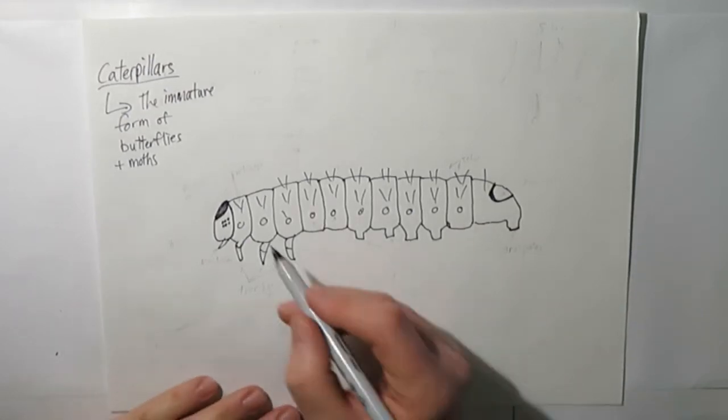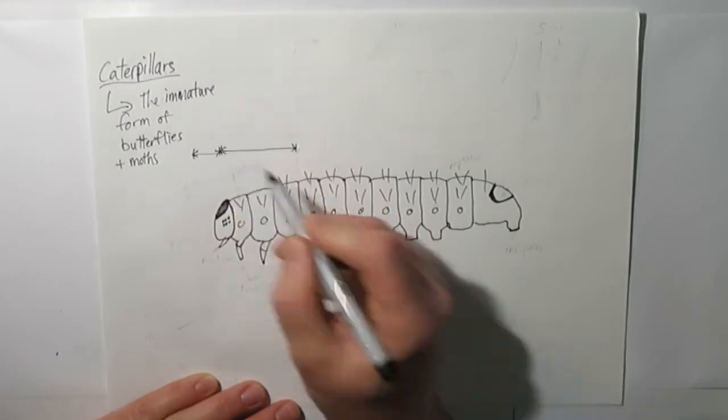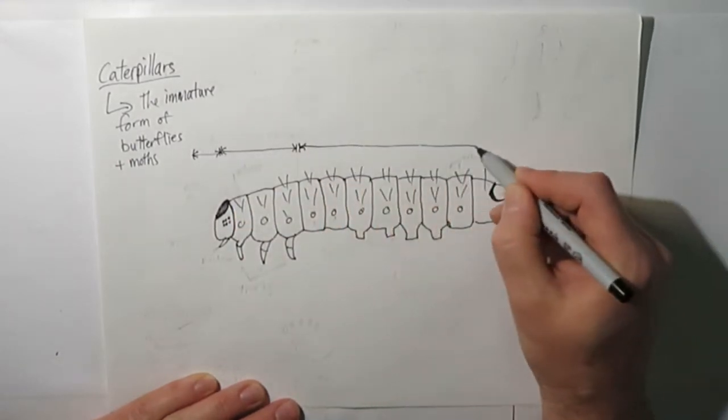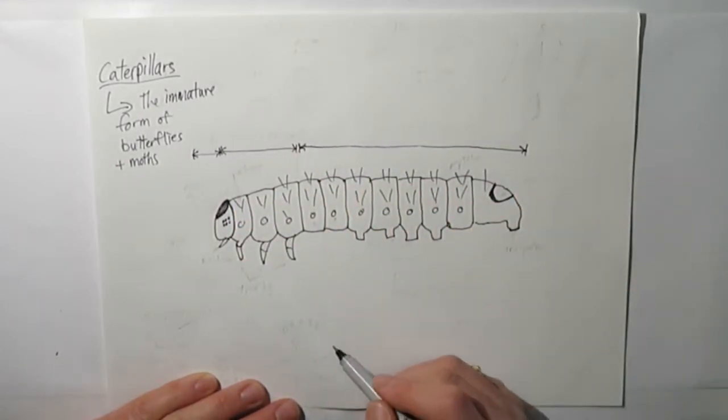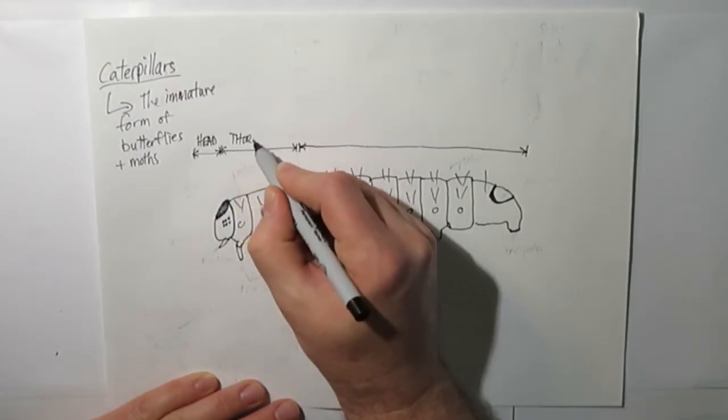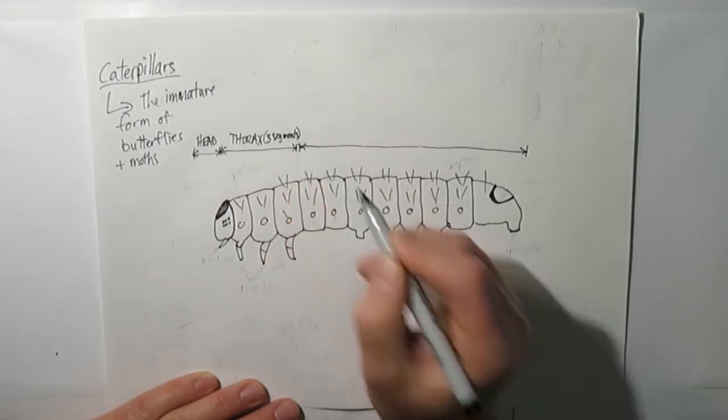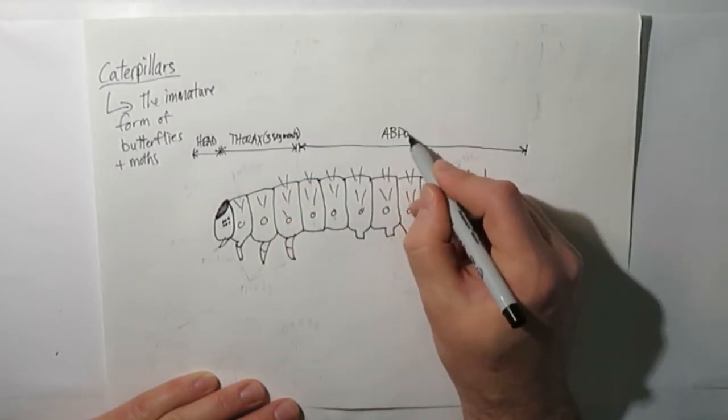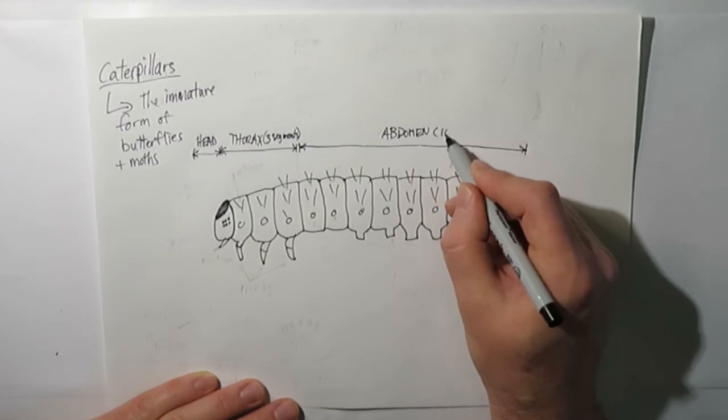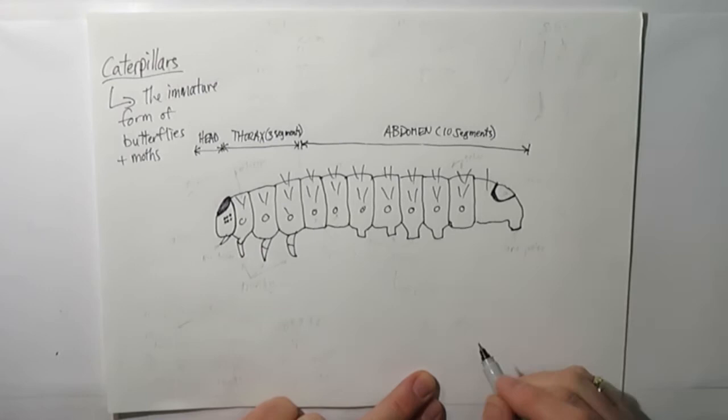The first thing to recognize is that a caterpillar has three essential segments of their body. The first part is the head which contains the mouth and eyes and other parts, then the thorax which would be like the shoulders and upper chest on a human, and then the abdomen. The thorax has three segments and the caterpillar's abdomen is made up of ten segments.